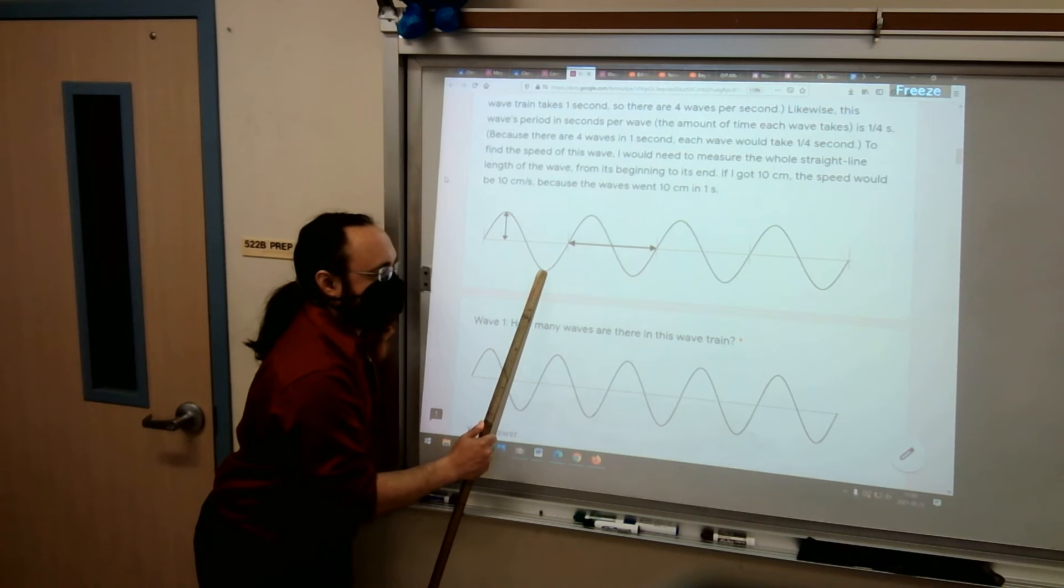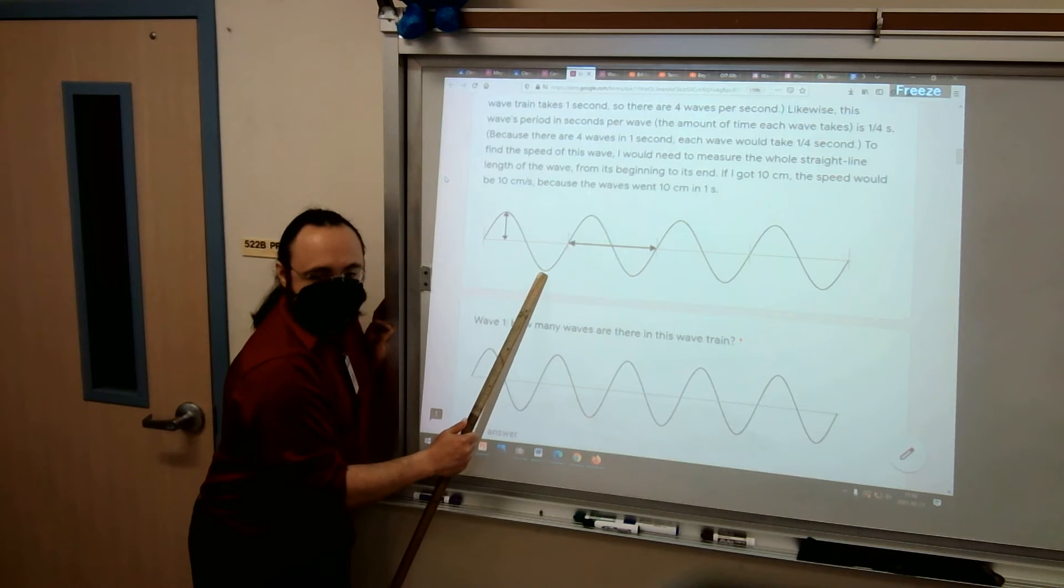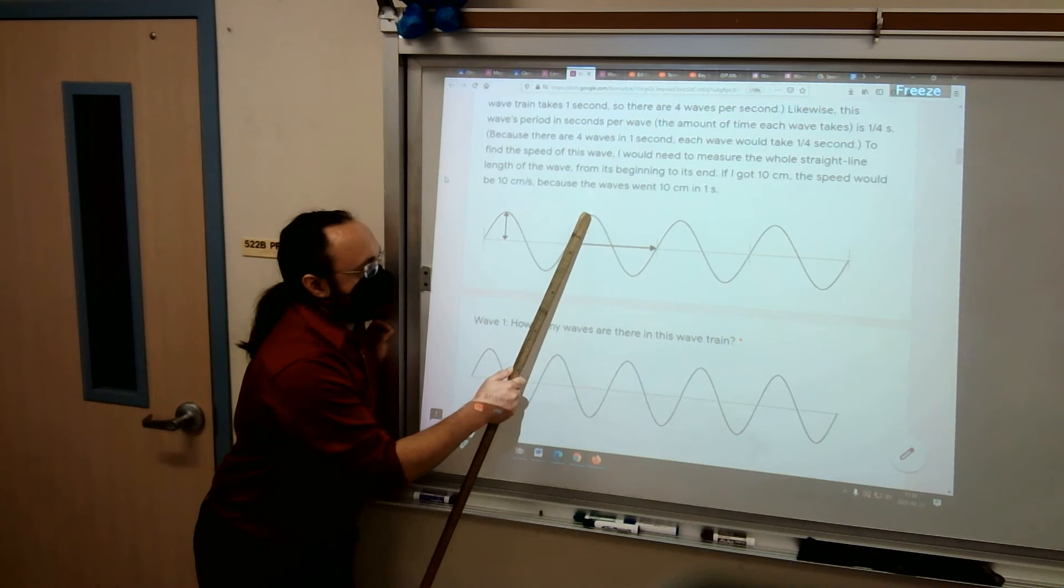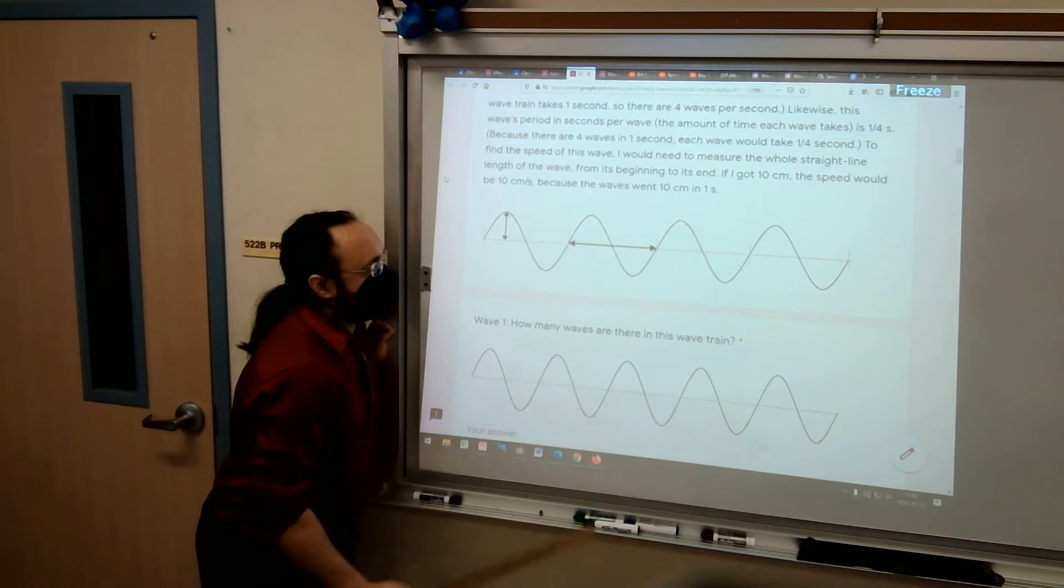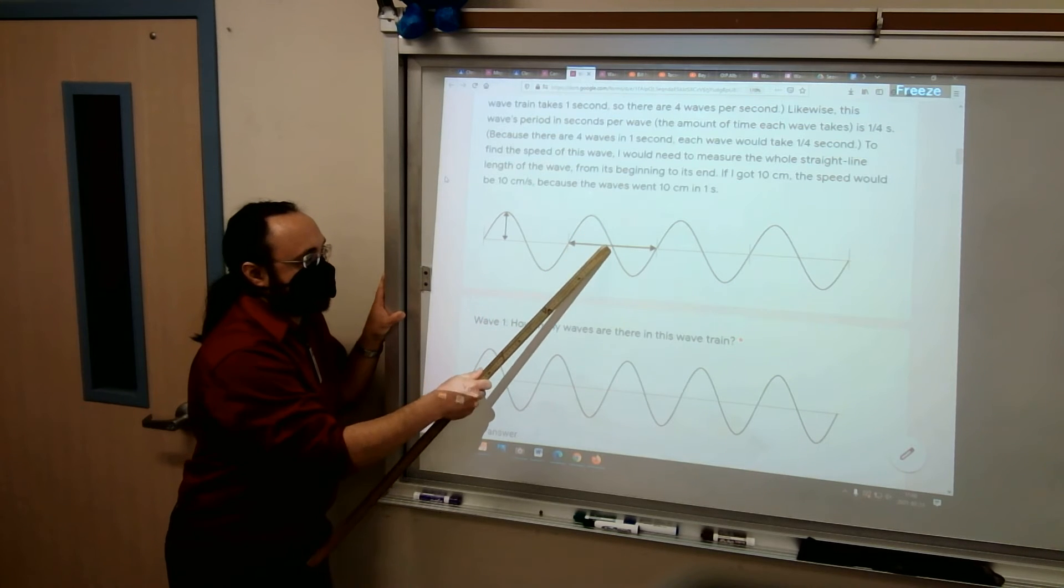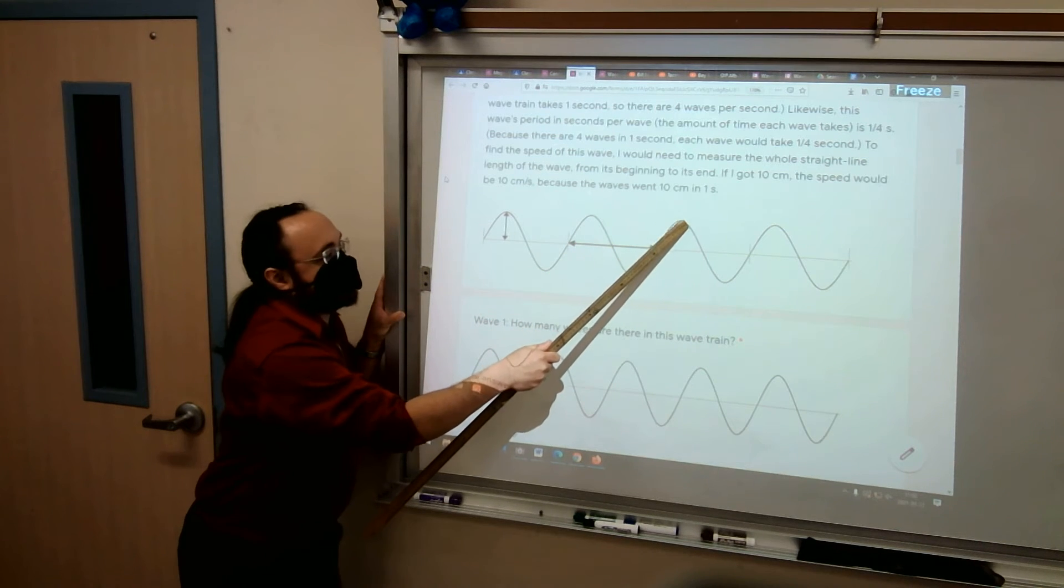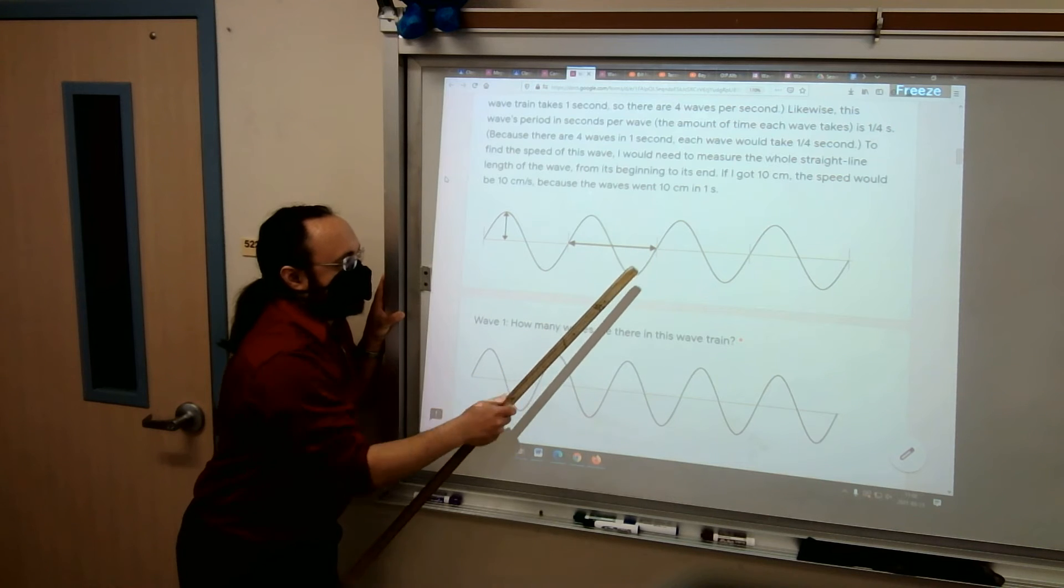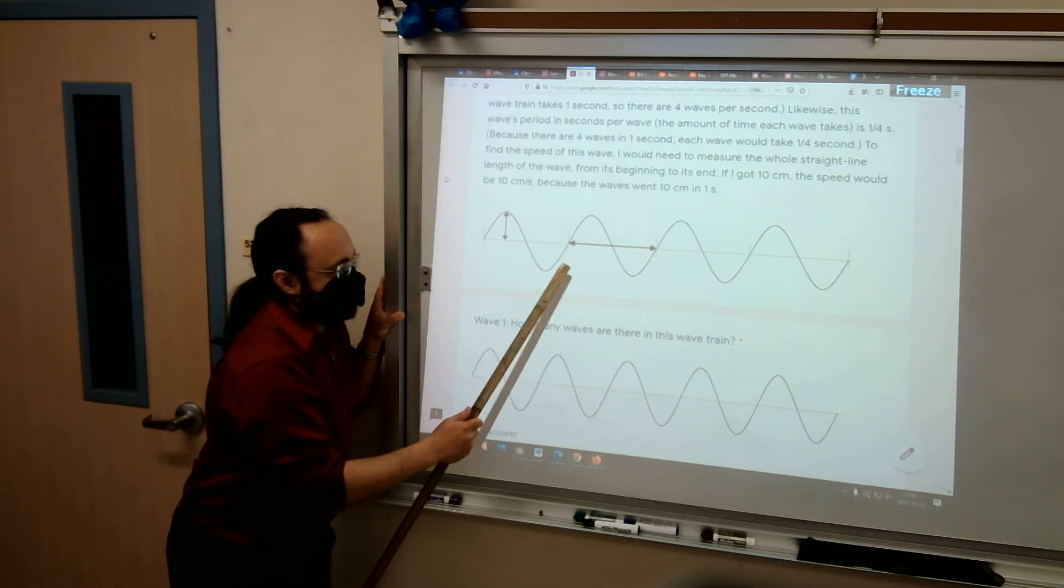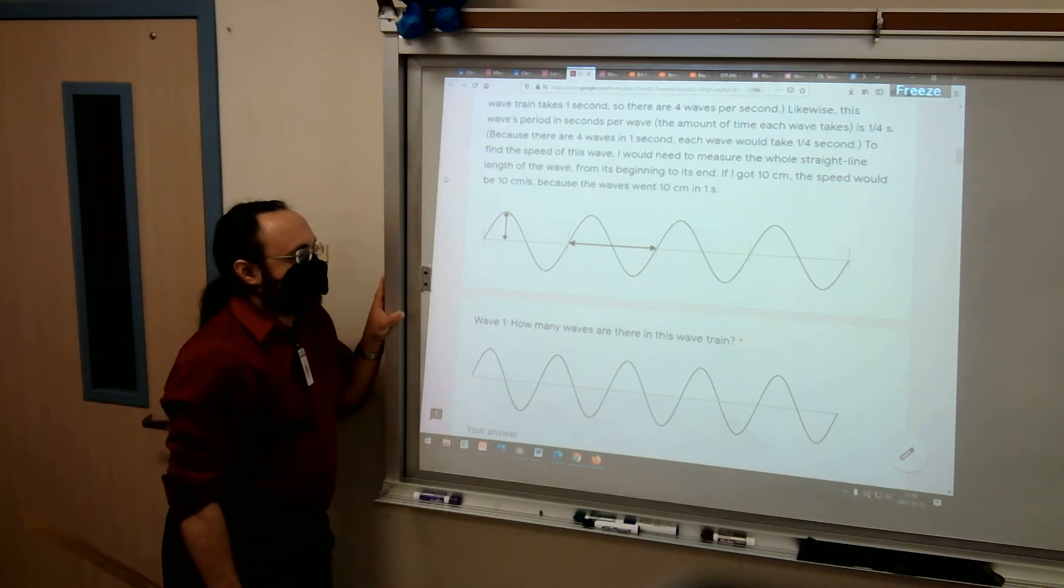It starts to go up again. And if you don't like that, you can measure from the bottom of it to the bottom of it, or this is called the trough. The trough of the wave to the trough of the next wave, or the crest of this wave to the crest of the other wave. As long as it's where the pattern starts to repeat. This is where it starts to go down and comes back up, and then it starts to go back down again. So it starts to repeat right there.